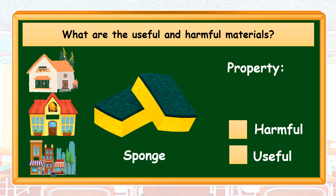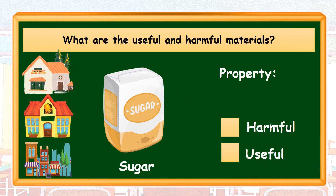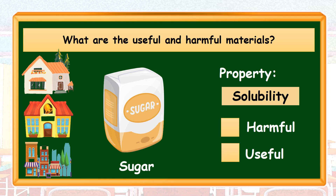Next on the list is a sponge. A sponge absorbs water and other liquid substances. Based on its property, a sponge is a useful material because it is used to wipe or dry liquids. We also have sugar on the list. Based on its property, sugar is a useful material because it is used to sweeten drinks or food.